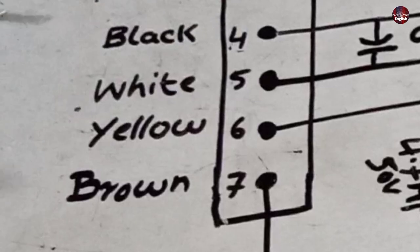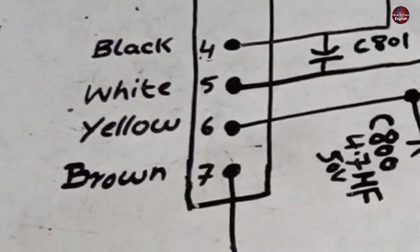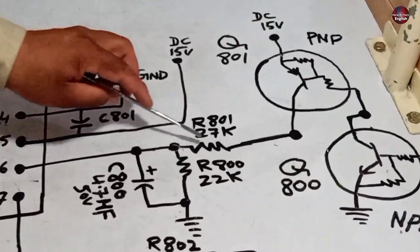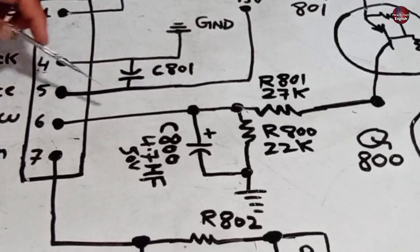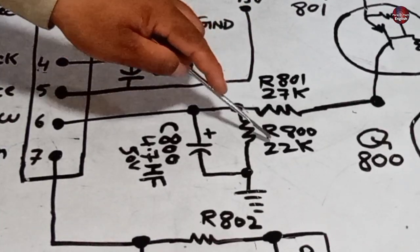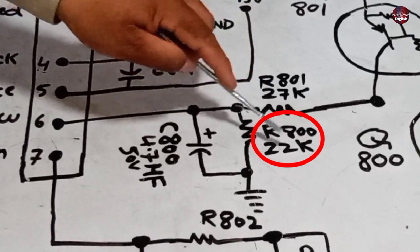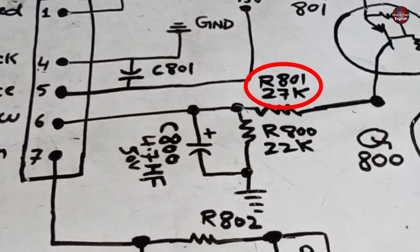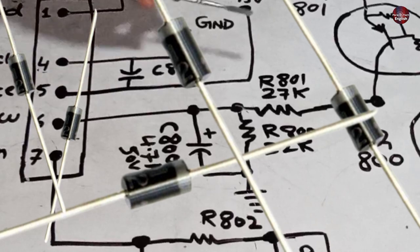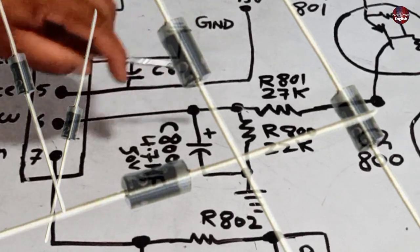The next pin is yellow, and the number is 6th. This pin is connected to the operating circuit, through which this motor is operated, and controls the speed of the motor. As you can see, it is connected to the resistance R800, and its value is 22 kOhms. The next is R801, which is 27 kOhms. It is different in different models.